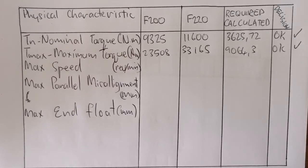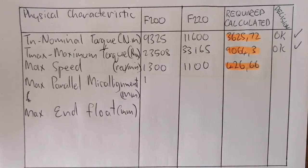Next, maximum speed. One can see that the speed it can handle for the F200 is 1300, for the F220 is 1100. What we've calculated or what the coupling needs to run is 426.66 RPM. Therefore, okay.